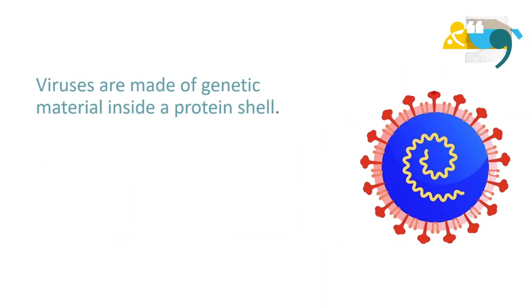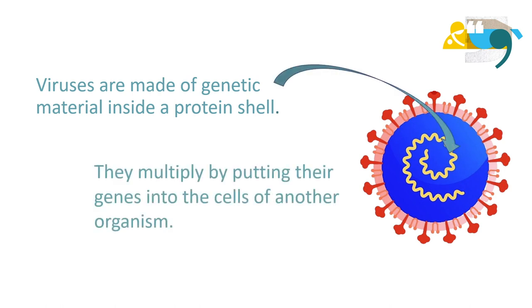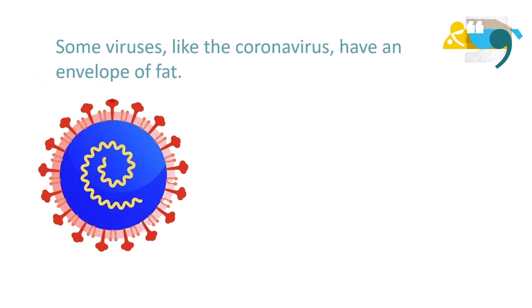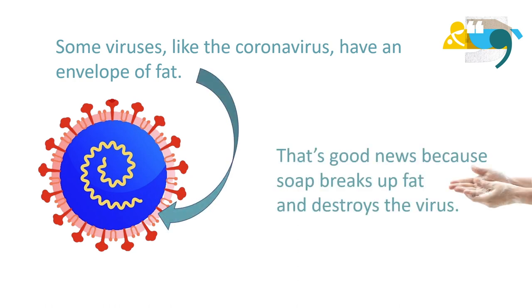Viruses are made of genetic material inside a protein shell. They multiply by putting their genes into the cells of another organism. Some viruses, like the coronavirus, have an envelope of fat. That's good news, because soap breaks up fat and destroys the virus.